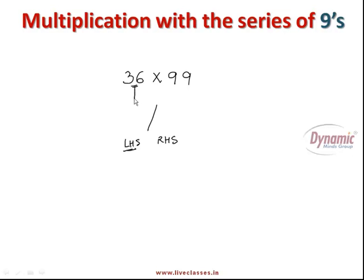Just subtract 1 from it. That is, subtracting 1 from 36 will give you 35. Write that 35 as the left hand side answer. And whatever you get in the left hand side, subtract those numbers from 9's and write that as the right hand side answer. What I mean to say: 9 minus 3 gives you 6, 9 minus 5 gives you 4. So the complete answer is 3564.